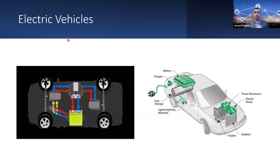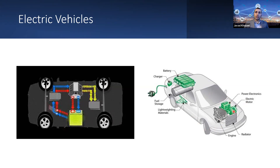Electric vehicles have a battery pack that generates direct current (DC). Instead of a combustion engine, an EV uses an electric motor, which requires electricity to rotate — the reverse of a generator. In a generator, you rotate the rotor to produce electricity; in a motor, you send electricity in and get mechanical power out to drive the car. The motor requires three-phase AC, but the battery provides DC, so an inverter converts DC to AC. The inverter also controls the motor's speed.